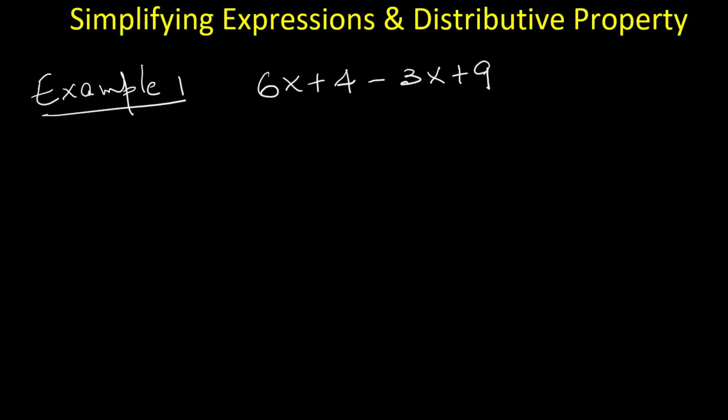Example 1. Suppose we have the expression 6x plus 4 minus 3x plus 9. The key idea is to combine like terms. The terms with an x are 6x and negative 3x. 6 minus 3 is 3, so together that gives us 3x. The constants are 4 and 9. Adding them gives 13. So the simplified expression is 3x plus 13.